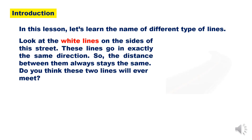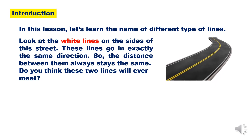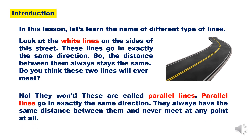Look at the white lines on the sides of this strip. These lines go in exactly the same direction, so the distance between them always stays the same. Do you think these two lines will ever meet? No, they won't. They are called parallel lines. Parallel lines go in exactly the same direction. They always have the same distance between them and never meet at any point at all.